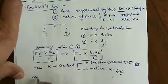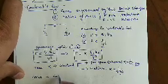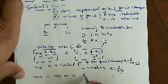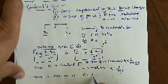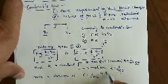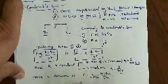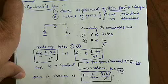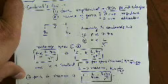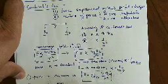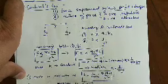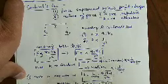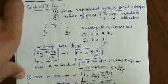The force in vacuum is 1 upon 4π·ε₀ · Q1·Q2 divided by r². This is your force in vacuum. The force in medium is 1 upon 4π·ε · Q1·Q2 divided by r². These are the two force formulas.